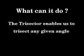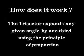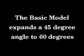What can it do? The Trisector enables us to trisect any given angle. How does it work? The Trisector expands any given angle by one-third using the principle of proportion. The Basic Model expands a 45-degree angle to 60 degrees.